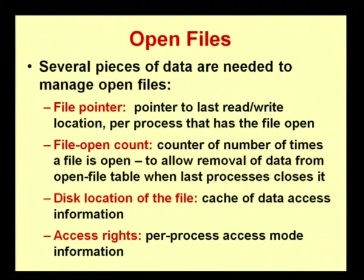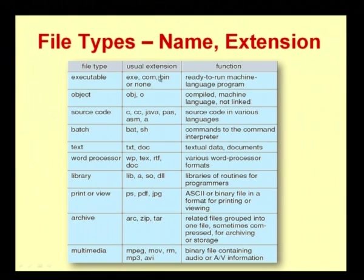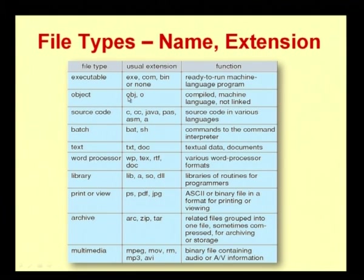Let us see the different file types and their extensions. A .doc file is saved with the extension .doc. For executable files, the extension is .exe, .com, or .bin. For object files — used in Java compilation — the extension is .obj or .o. These object files are used for compilation purposes.